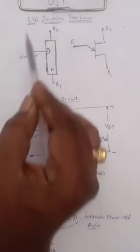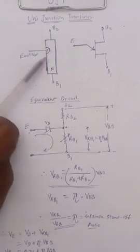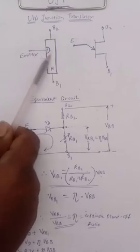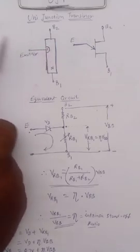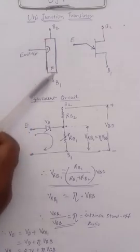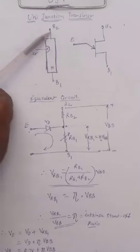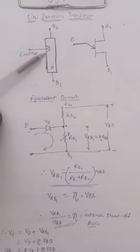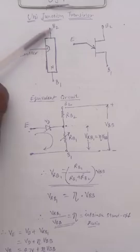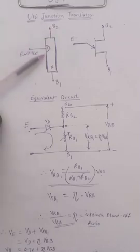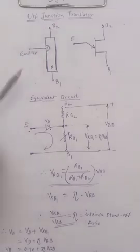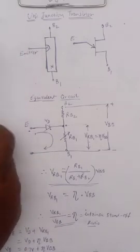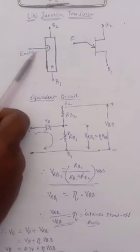Good morning. Last time we saw unijunction transistor construction and its equivalent circuit. In the construction, it is the unijunction — that's why there is only a single junction. It has a p-n junction diode, but this n-region is elongated in a bar shape. Two leads are connected B2 and B1. The emitter junction is formed just above the center towards base two. The p-region is named as emitter.